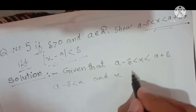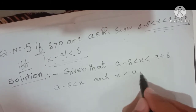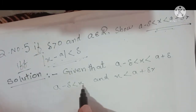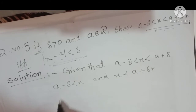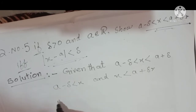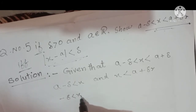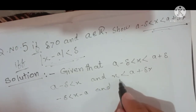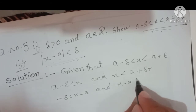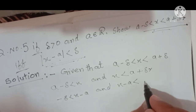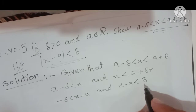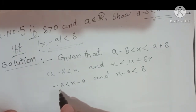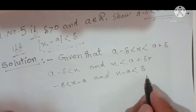From a minus delta < x and x < a plus delta, we rearrange to isolate x minus a. This gives us: minus delta < x minus a, and x minus a < delta. So x minus a lies between negative delta and positive delta.